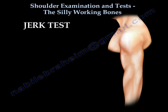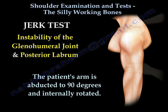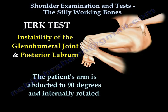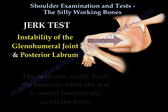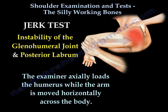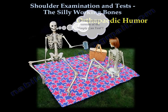Jerk test is a real test to study the instability of the glenohumeral joint and the posterior labrum. The patient's arm is abducted to 90 degrees and internally rotated. The examiner axially loads the humerus while the arm is moved horizontally across the body. A positive test is indicated by a sharp pain in the shoulder with or without a click.